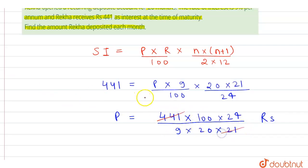441 will get cancelled by 21, 21 times. 100 will get cancelled by 20, 5 times. 24 will get cancelled by 3, 8 times. And 9 will get cancelled by 3, 3 times. 21 will get cancelled by 3, 7 times.